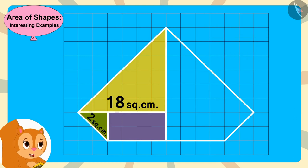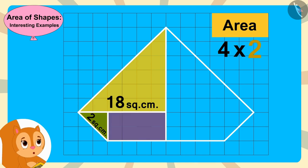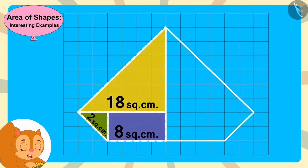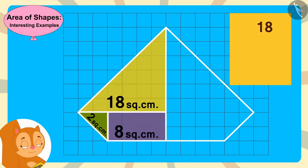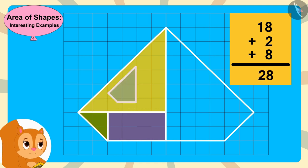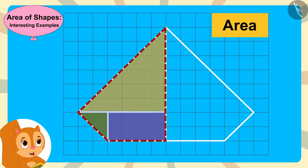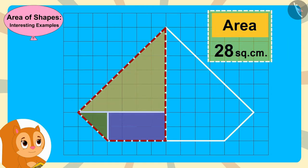The area of the small triangle is half of 4, or 2 square centimeters. And the area of the rectangle is 4 times 2, or 8 square centimeters. By adding the area of all these shapes, Chanda found the area of this part of the diamond to be 28 square centimeters.